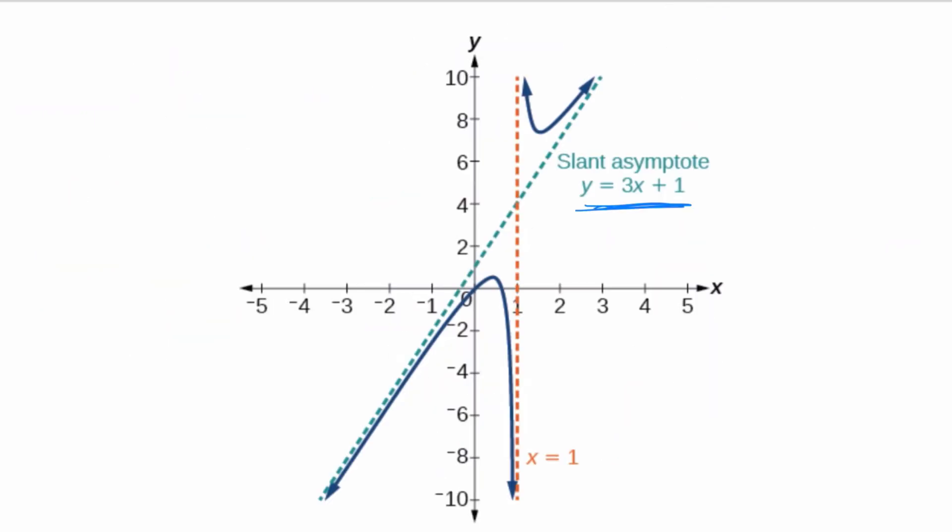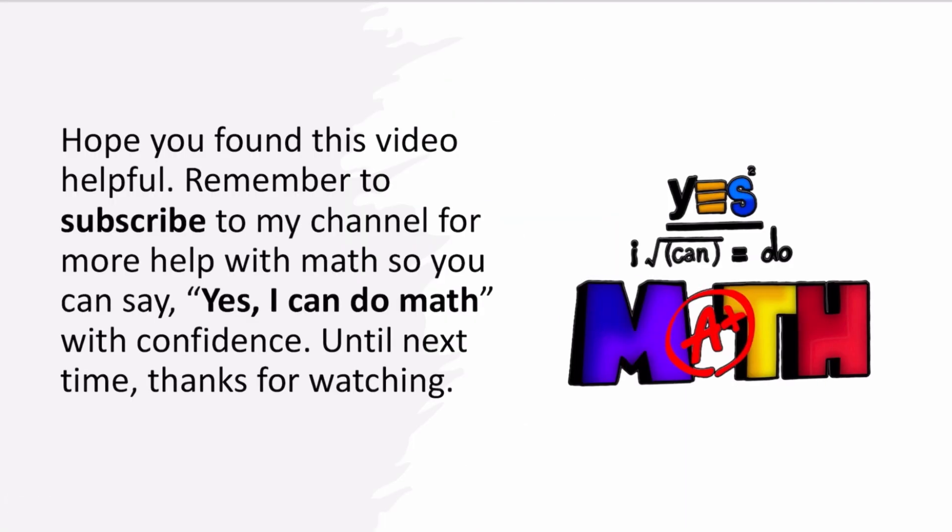So this right here is a much prettier picture than the one that I did for you, so that you can see exactly what this graph looks like when you have a slant asymptote and a vertical asymptote. I hope you found this video helpful. Remember to subscribe to my channel for more help with math so that you can say yes, I can do math with confidence. Until next time, thanks for watching.